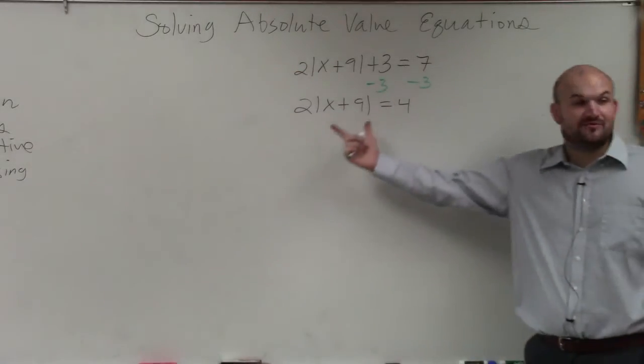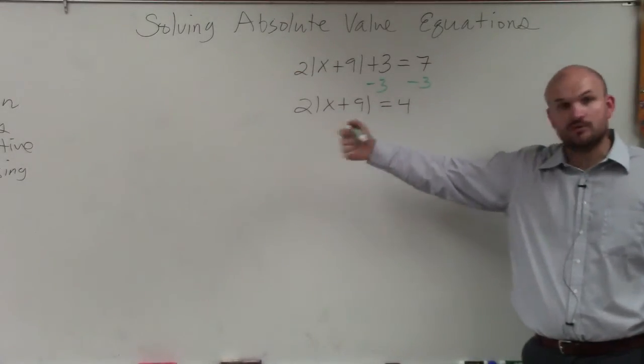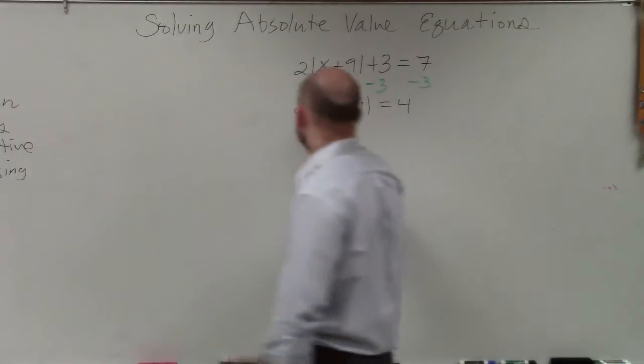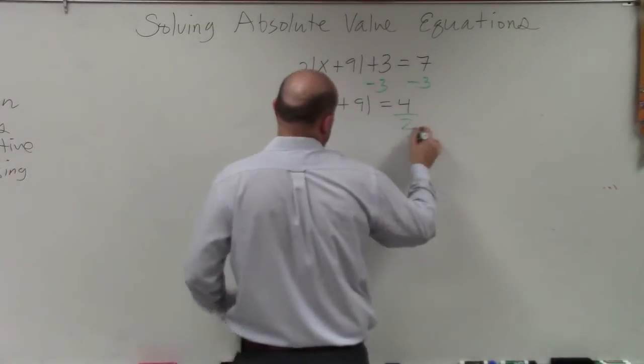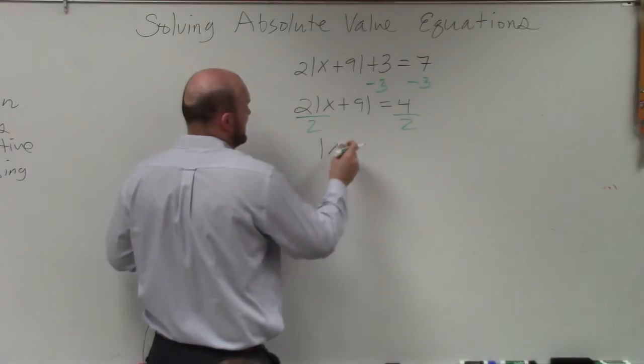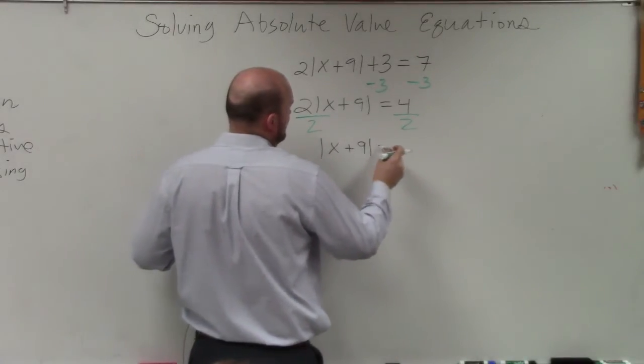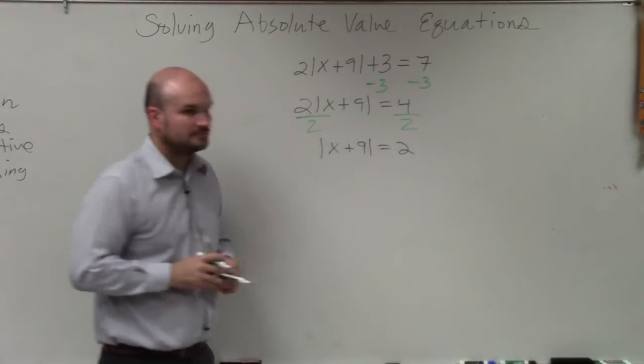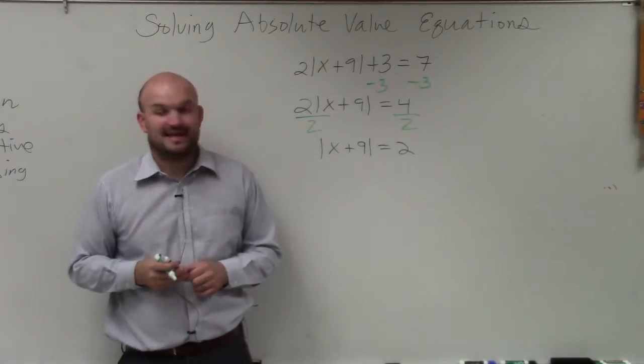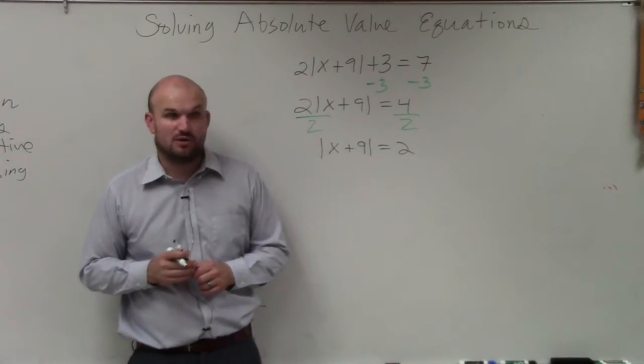Now you can see my absolute value symbol is being multiplied by 2, so we undo multiplying by 2 by dividing by 2. So therefore, I have the absolute value of x plus 9 is equal to 2. Is everybody following me so far? That's just step 1.